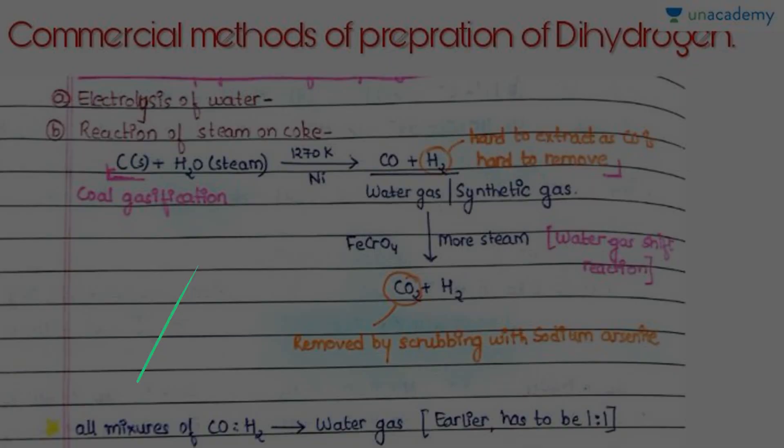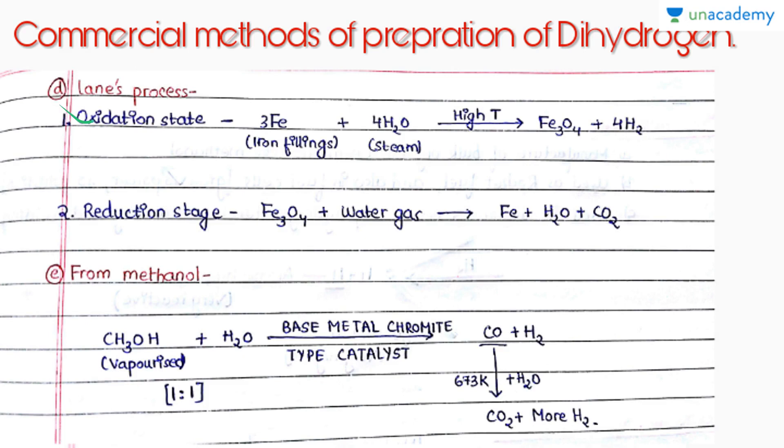Another process is Lanes process. What we do here is we pass steam through iron, which oxidizes to give iron oxide and hydrogen gas. What we do with this iron oxide is that we pass water gas through it, giving us carbon dioxide, H2O, and our iron is recovered.